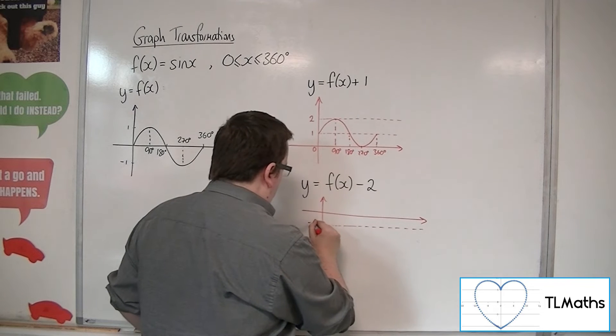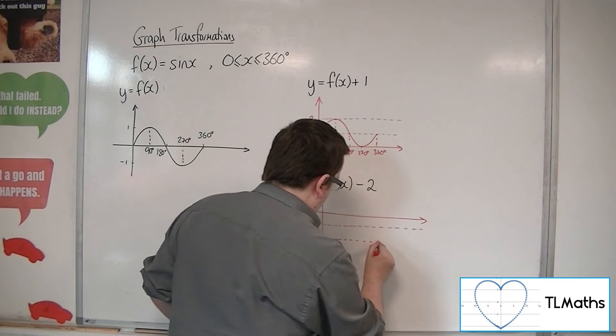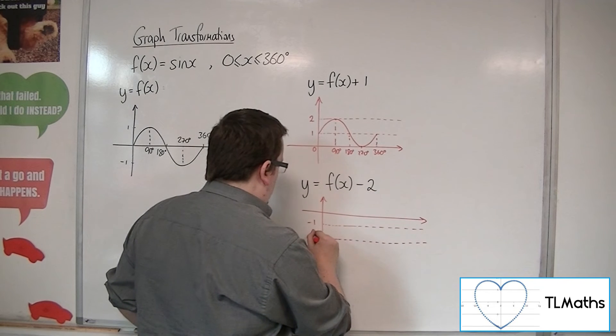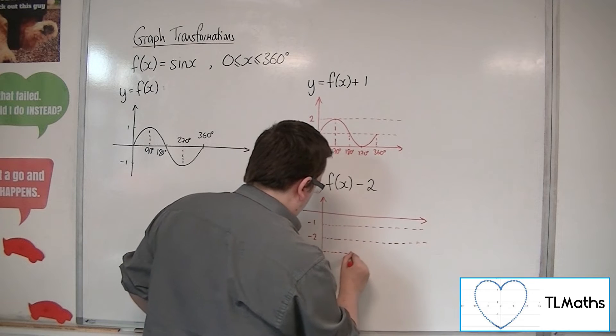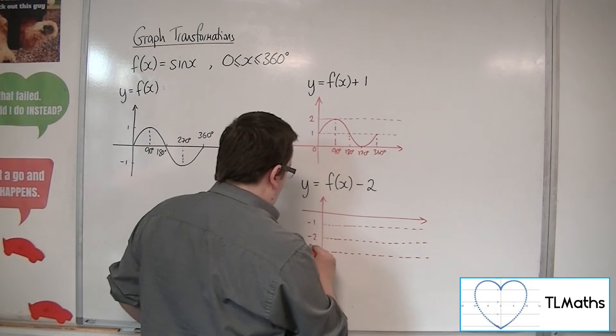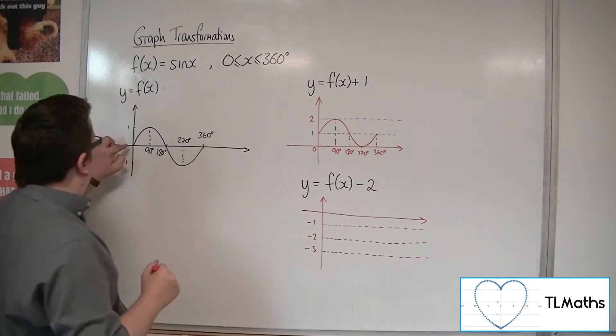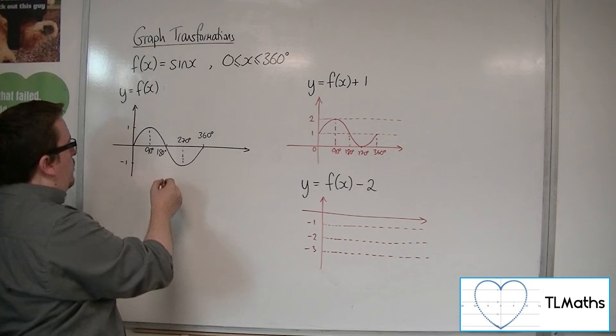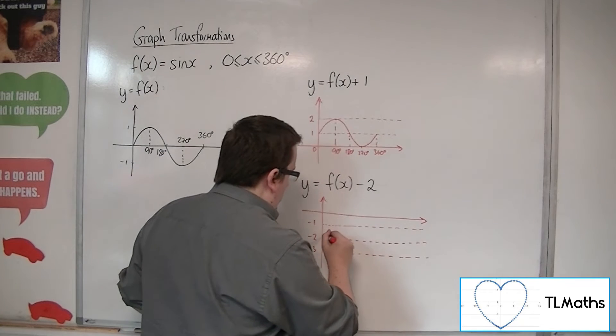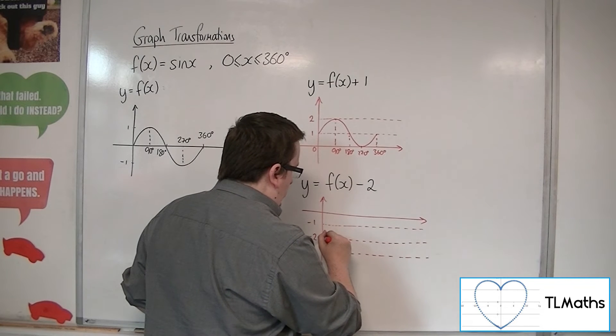So that'll be minus 1. There's minus 2. And there's minus 3. So this point will drop down 2, that point will drop down 2, etc. So my curve will start from this point here.